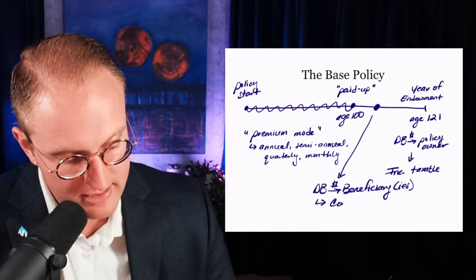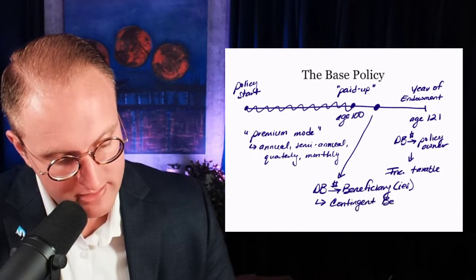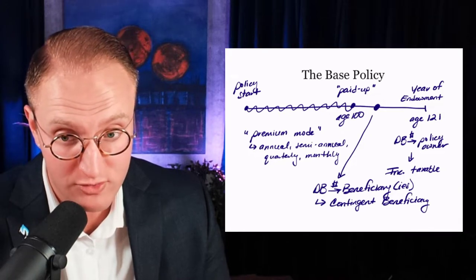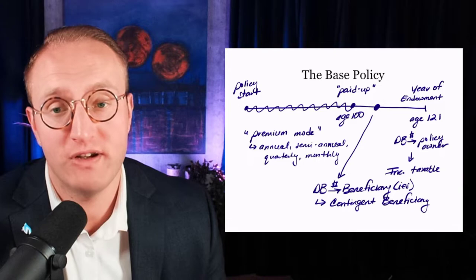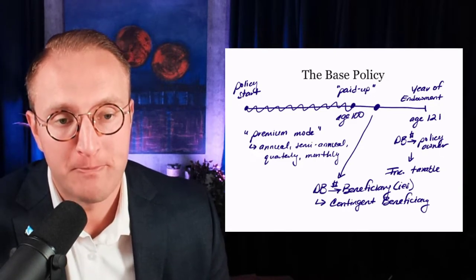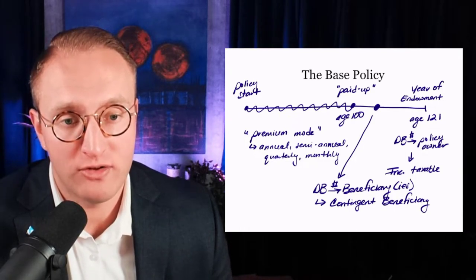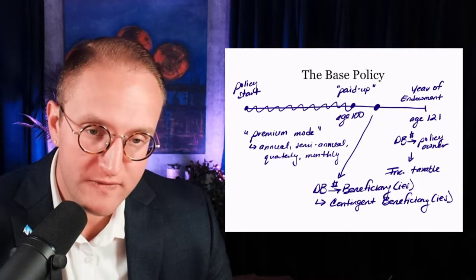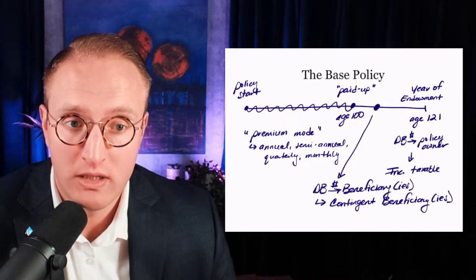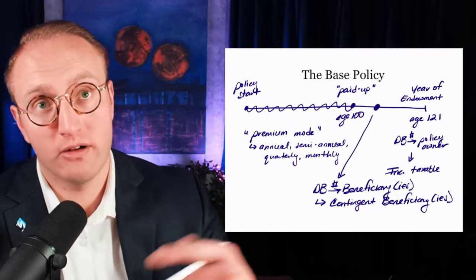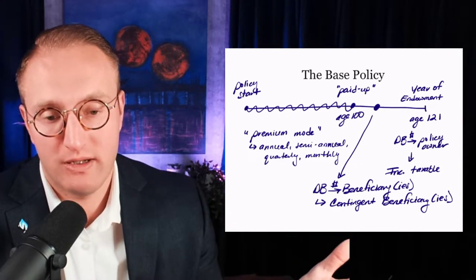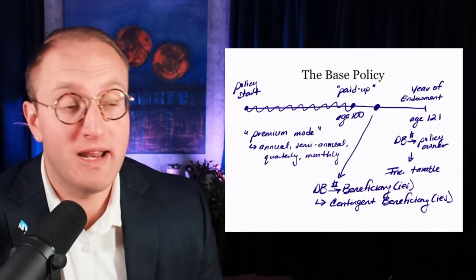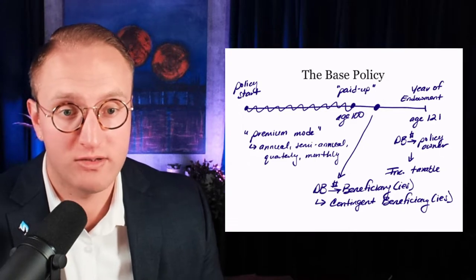You might also name contingent beneficiaries — those to whom death benefit will be paid if the primary beneficiary has passed away. The policy owner gets to name beneficiaries and contingent beneficiaries, and can change them after the policy is in force. When you buy your contract you may name your spouse and never change it, but many clients change their beneficiary later — for example, those who bought insurance before getting married.